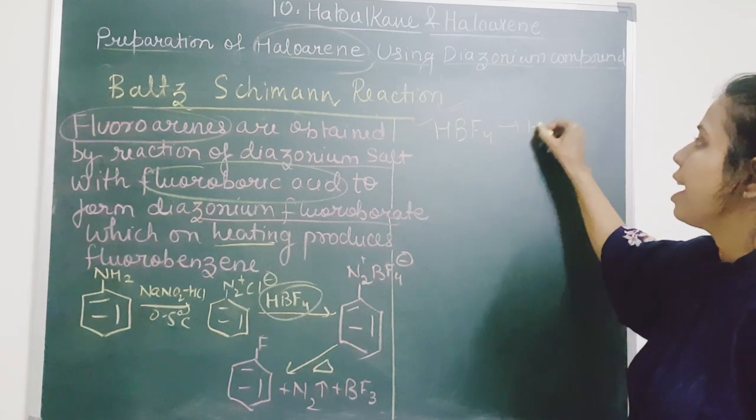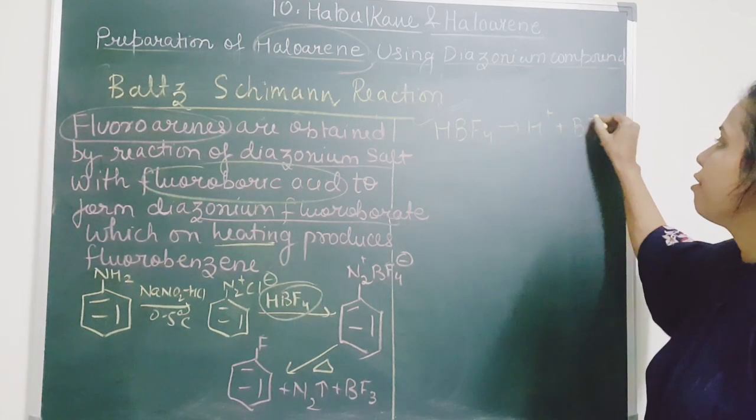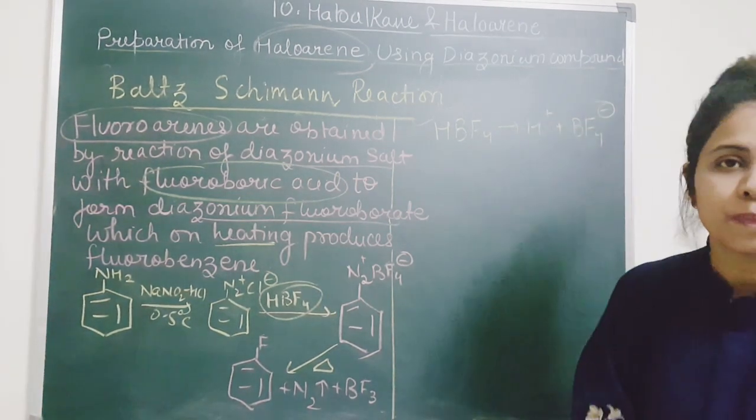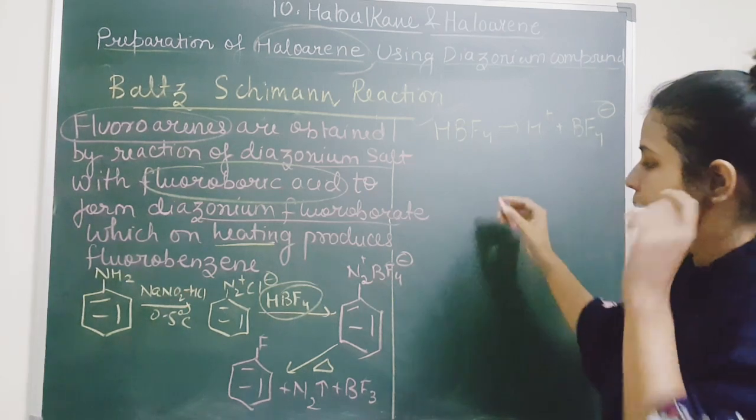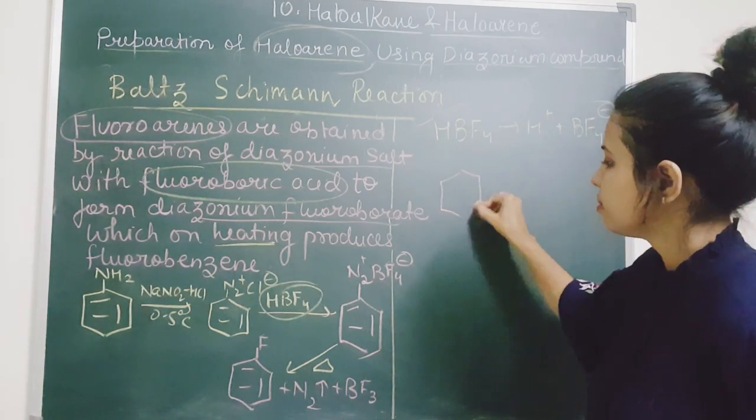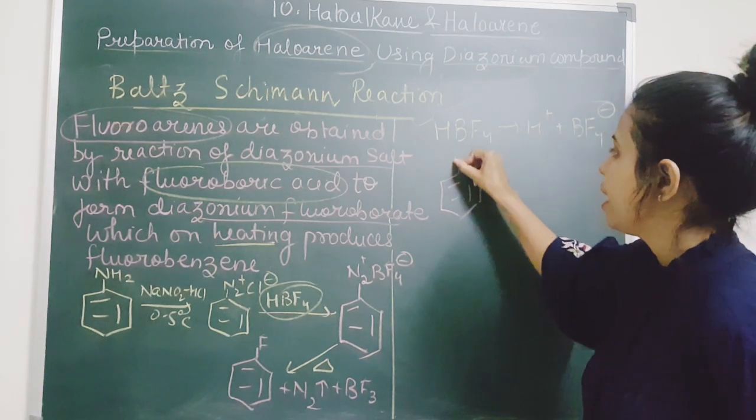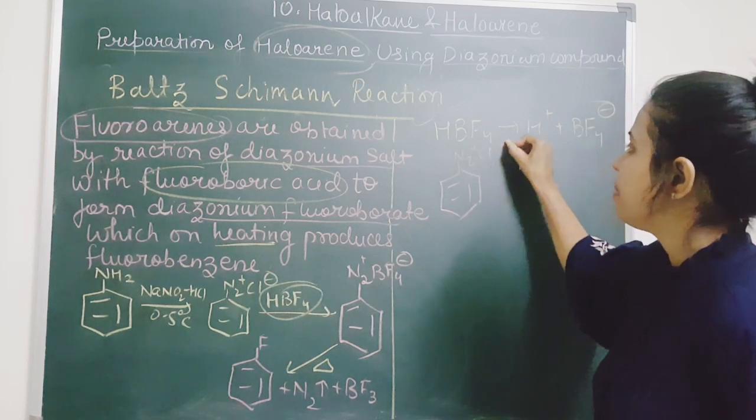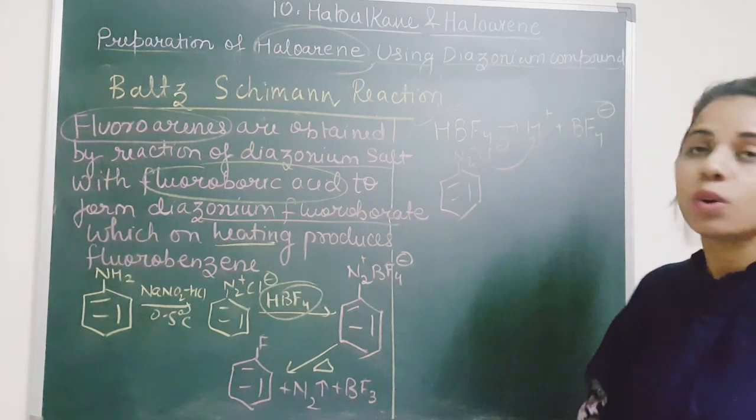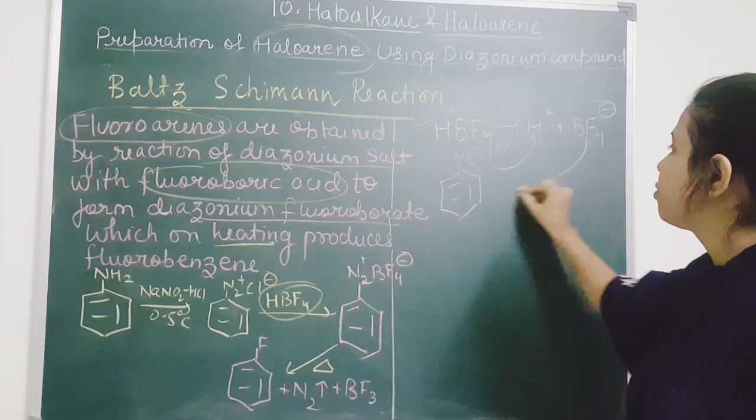HBF4 kya karega? H+ plus BF4- generate karega. Here we have benzene ring where we have N2+ and Cl-. This Cl- will go with H+ and this BF4- will come here.